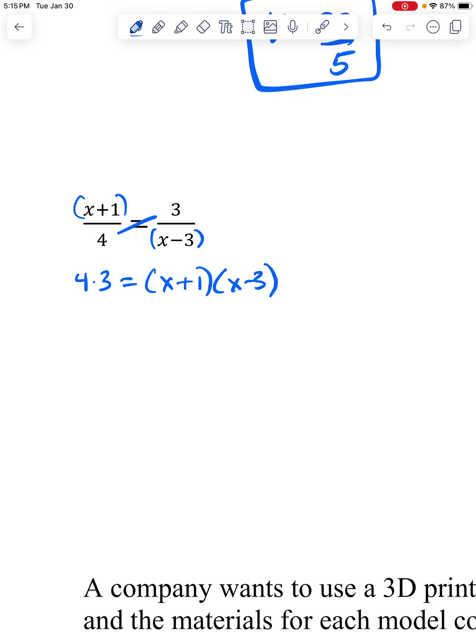Now, I can't have the bottom be zero. Four can't be zero, so that doesn't concern me, but when will x minus three equal zero? That will happen if x is three, so that's going to be a number that I cannot use, even if I get it as an answer. So let's see.